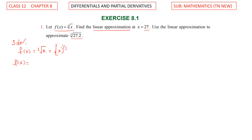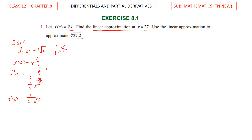f of x equal to x power 1 by 3. For the linear approximation, we need to find f dash of x. Using the formula n into x power n minus 1, f dash of x equals 1 by 3 into x power minus 2 by 3, which gives us 1 divided by 3 x power 2 by 3.